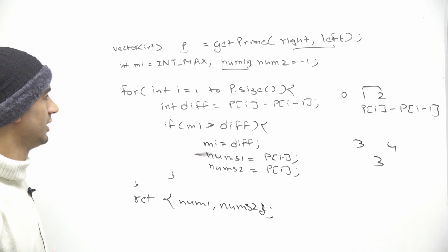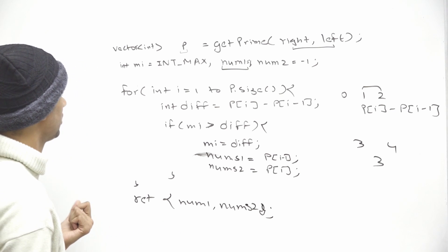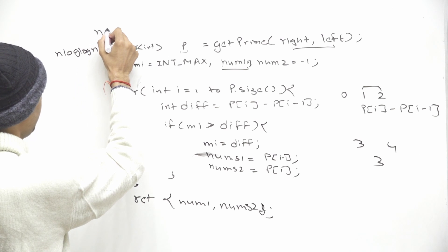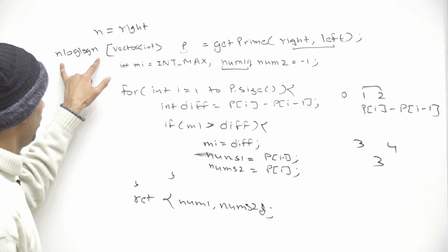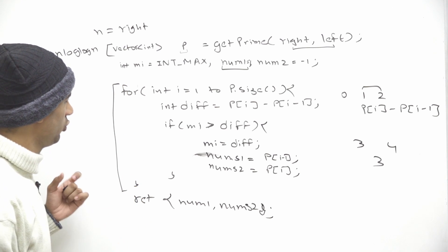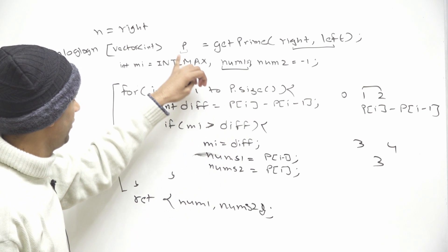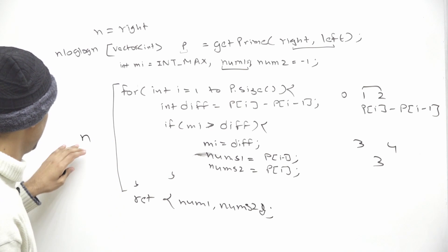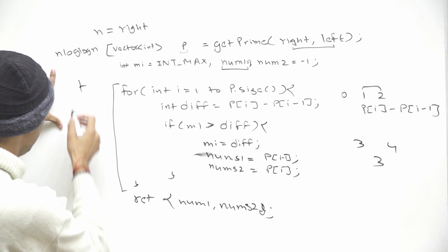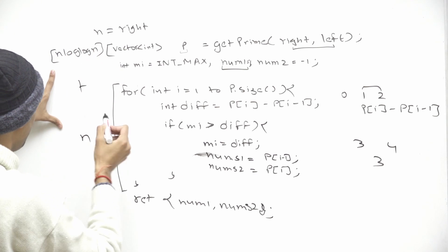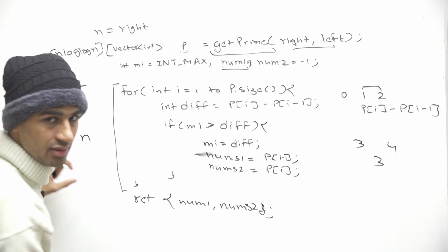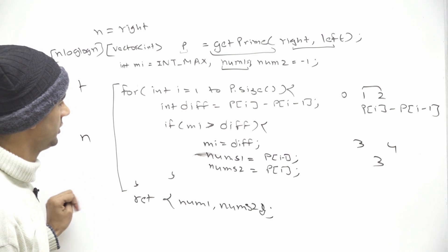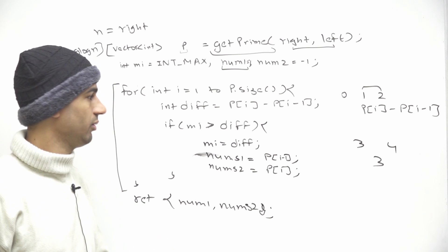The time complexity for the Sieve part is O(n log log n) where n equals right. The for loop executes at most as many times as there are prime numbers in the range, which never exceeds n, so the overall time complexity is dominated by the Sieve: O(n log log n) where n equals right. That's it for this problem — I'll see you in the next one.